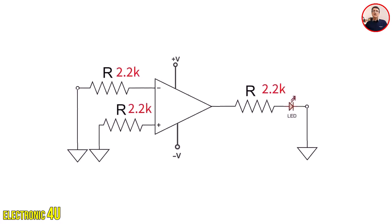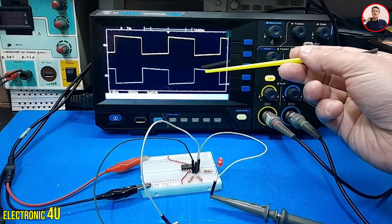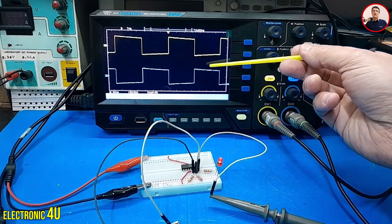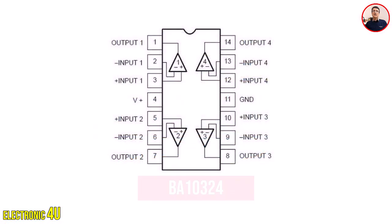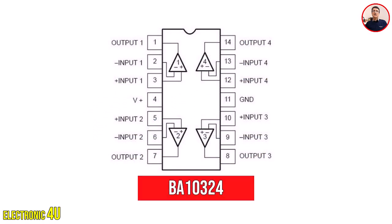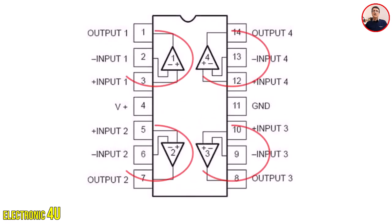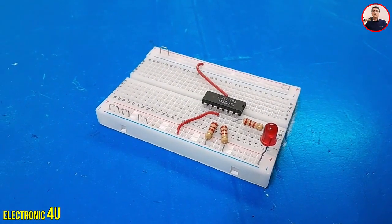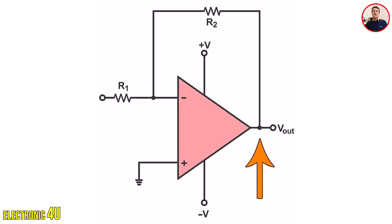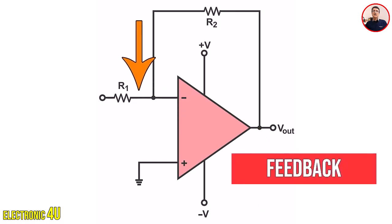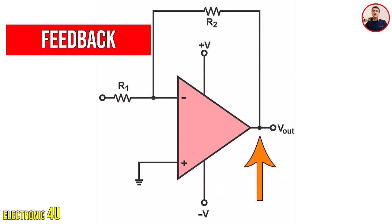First of all, I'll explain the circuit. I am using the PA-10324 IC, which is an op-amp that has four operational amplifiers inside. Op-amps have many applications and are used in simple circuits as amplifiers or comparators. However, when we connect the output back to the input — which is called feedback — we can design much more complex circuits. Feedback is essentially feeding the output of the circuit back into it to change its performance.